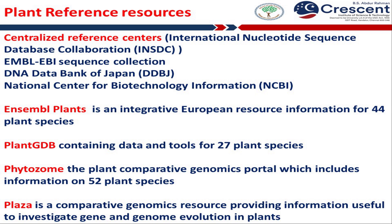Plant GDB contains data and tools for plant genomics and reports genomes of 27 plant species. Phytozome, the Plant Comparative Genomics Portal of the Department of Energy's Joint Genome Institute from the USA, includes information on 52 plant species. PLAZA is a comparative genomics resource providing information useful to investigate gene and genome evolution in plants.